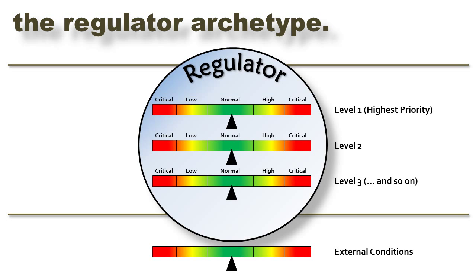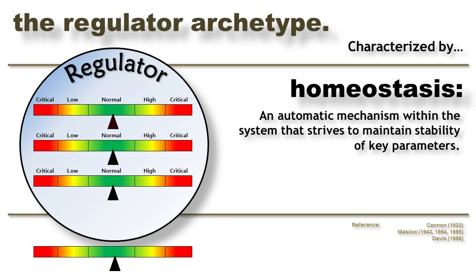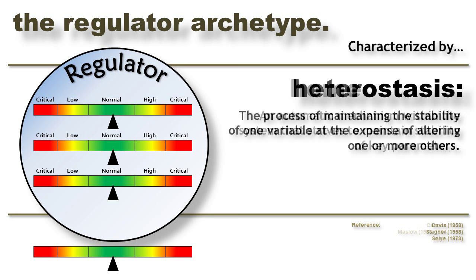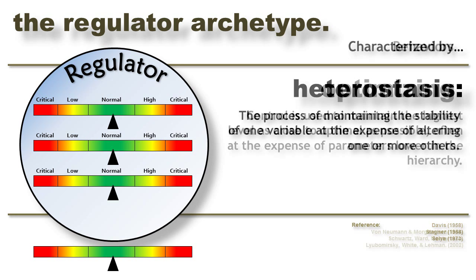Next is the Regulator archetype. Like the Endurant, this archetype has a fixed internal configuration, but it has the ability to adjust the set points of its components to compensate for changes in the environment. The Regulator knows which components are most important and manages them in a hierarchy designed to give priority to the most critical parameters first. Accordingly, the Regulator is driven by the system principle of homeostasis — it has automatic mechanisms that strive to maintain the stability of its key parameters, which are at the top of the hierarchy. Of equal importance, though, is the principle of heterostasis: in order to keep one parameter stable, the system is required to alter the set points of others.